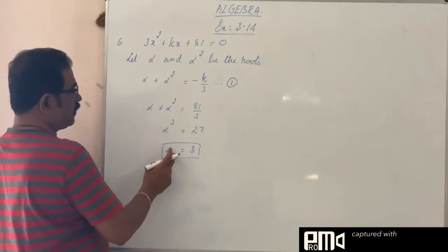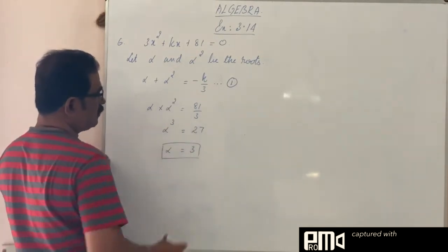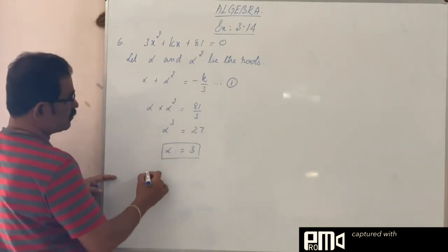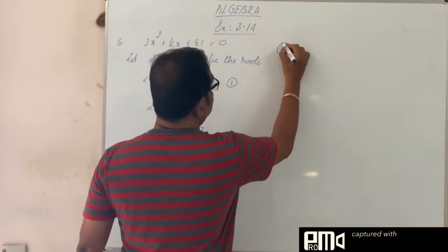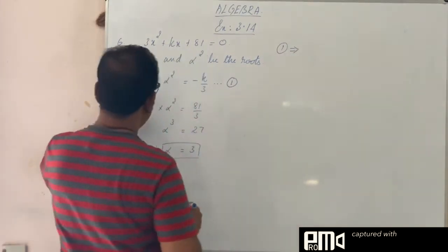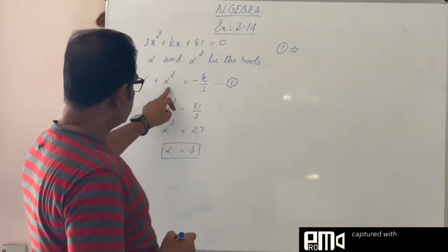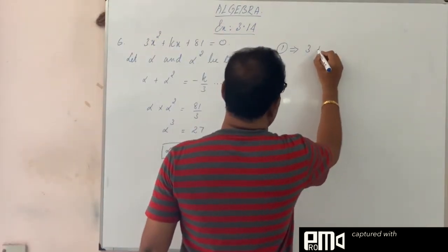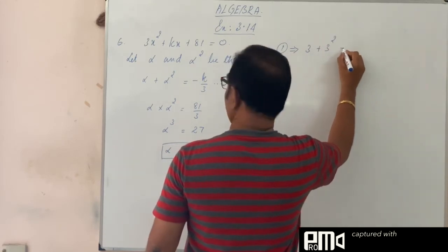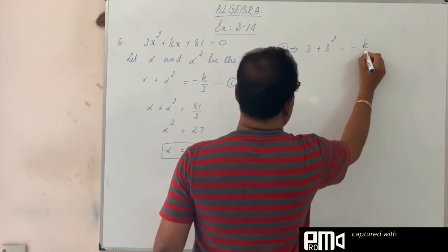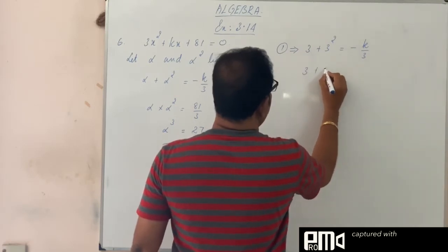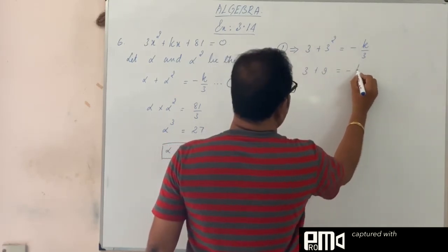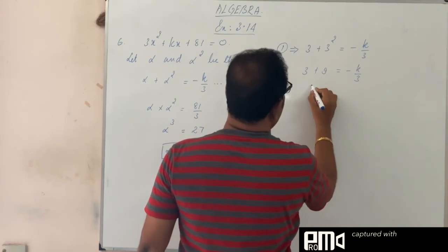Now I am going to substitute this value of alpha in equation number 1. See equation number 1, alpha plus alpha square, 3 plus 3 square, minus k by 3. 3 plus 9, 12.